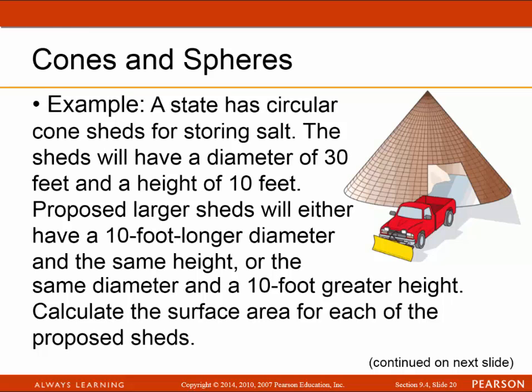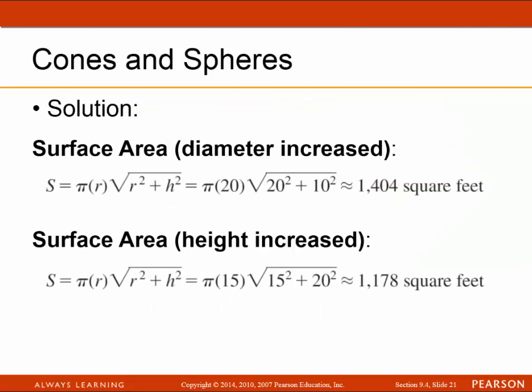For the same salt shed problem, let's now calculate the surface area for each of the proposed sheds. When the diameter is increased, the surface area becomes 1,404 square feet. When the height is increased, the surface area is 1,178 square feet.